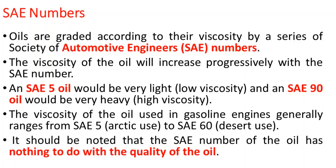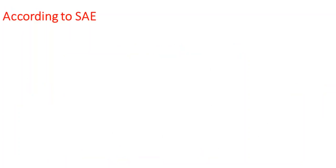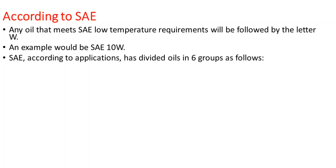It is important to note that the SAE number has nothing to do with the quality of the oil. SAE 5 does not mean lower quality and SAE 60 higher quality — the number relates only to viscosity. SAE 5 means low viscosity and SAE 90 means high viscosity. According to SAE, any oil that meets low-temperature requirements will be followed by the letter W — for example, SAE 10W indicates low-temperature suitability.